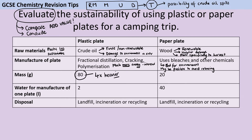We can think about the masses of these plates. The plastic plate is four times heavier — not just 'it's heavy', but specifically four times heavier. The reason we care about that is when it comes to transporting these plates, the heavier it is, the fewer we're going to be able to transport in one go, and the more fuel it's going to take. Burning more fuel is going to release carbon dioxide, which is a greenhouse gas. So when looking at the mass of the plates, again the plastic plate is the less sustainable option.